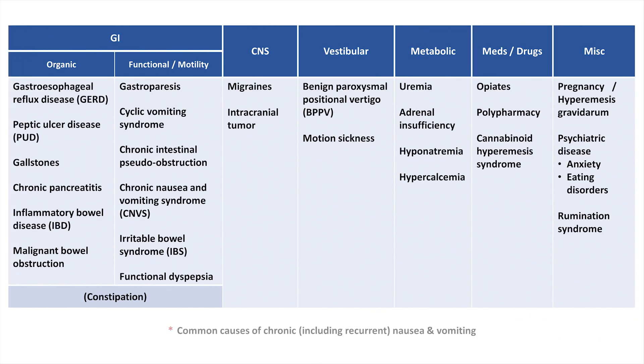Among all these conditions, the ones that are particularly common causes of chronic or recurrent nausea and vomiting are gastroparesis, migraines, motion sickness, polypharmacy, and pregnancy.